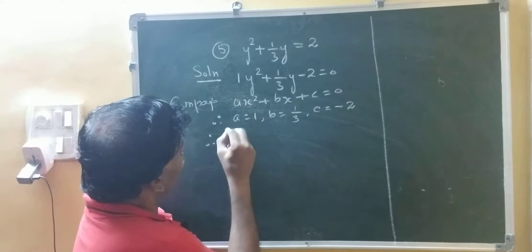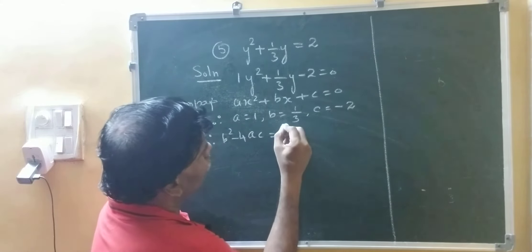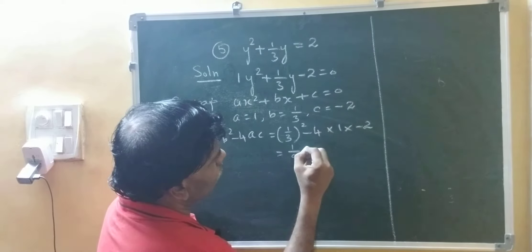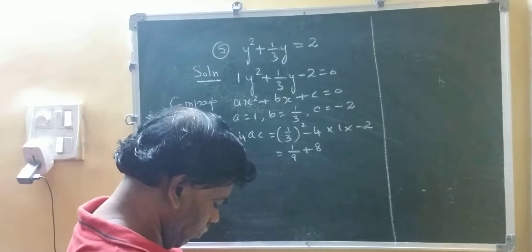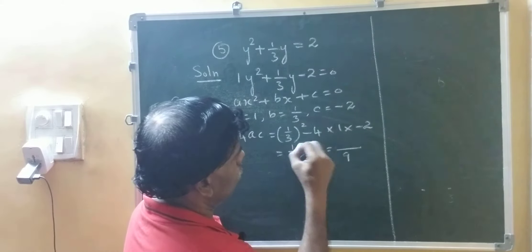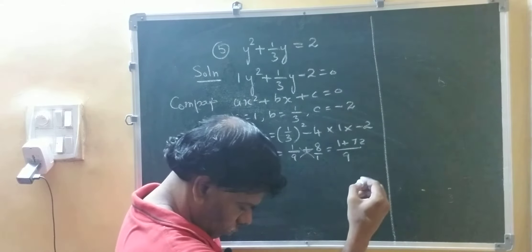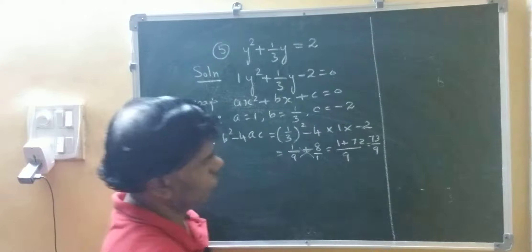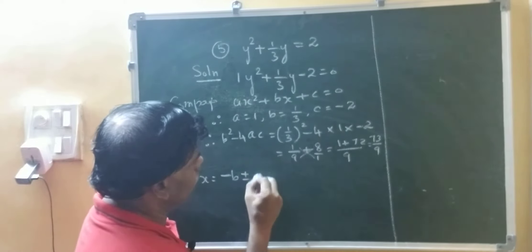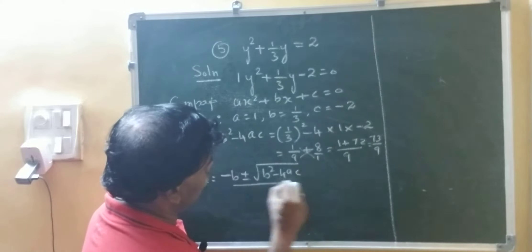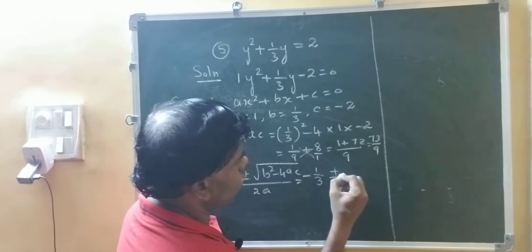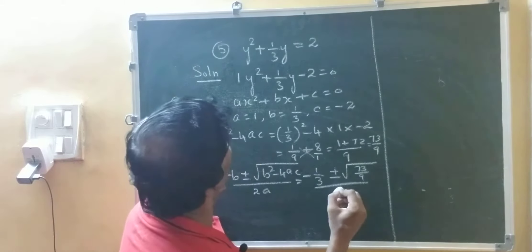Therefore, b squared minus 4ac — first we find out: 1 by 3 the whole square minus 4 into 1 into minus 2, giving 1 upon 9 plus 8, which is 73 upon 9. Now x equals minus b plus or minus root of b squared minus 4ac upon 2a, which equals minus 1 by 3 plus or minus square root of 73 upon 9, all upon 2 into 1.